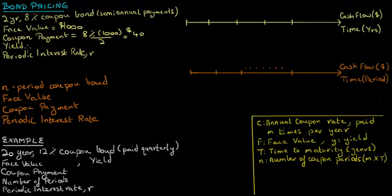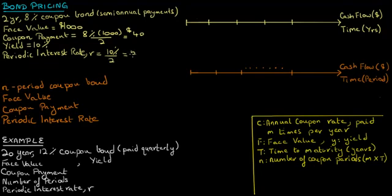Let's say the yield to maturity of this bond is 10%. And since there are two coupon periods in a year, the periodic interest rate denoted by R equals 10% divided by 2, which equals 5%.